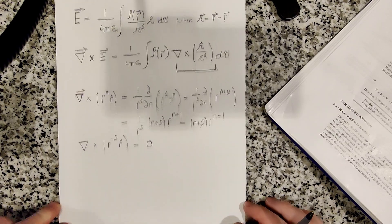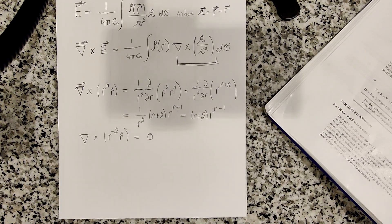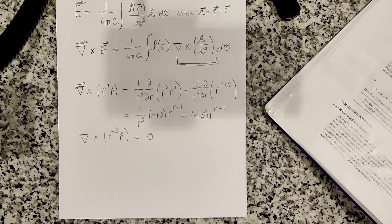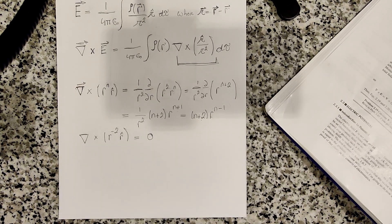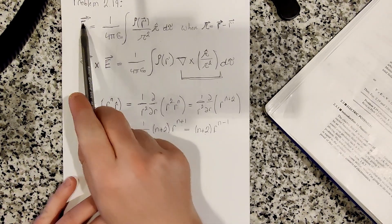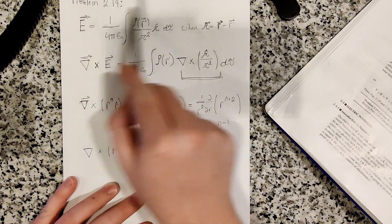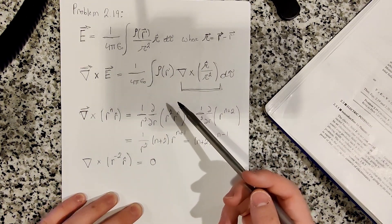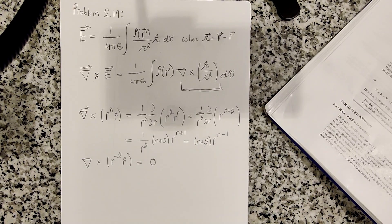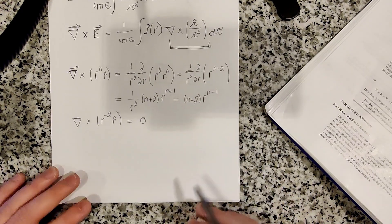And basically, that's the proof, or one of the proofs for the fact that an electrostatic field, which is described by this essentially Coulomb's law, has a curl of 0. All right. So that's about it for this video.